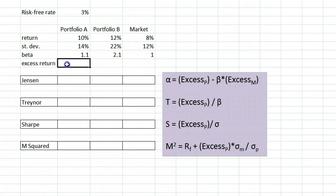For portfolio A, the excess return is its return 10% minus the risk-free rate 3%, which is 7%. Subtracting 3% from the other returns will give us the other excess returns.